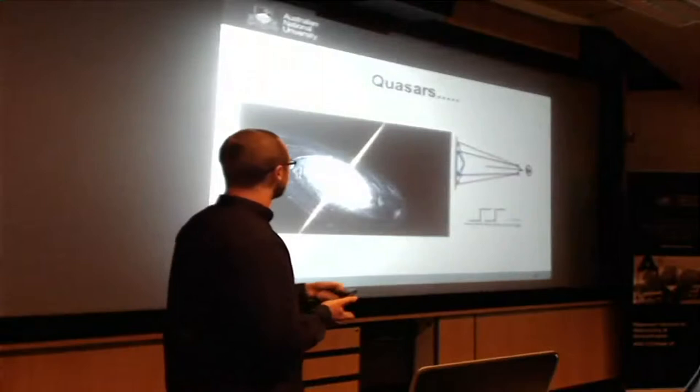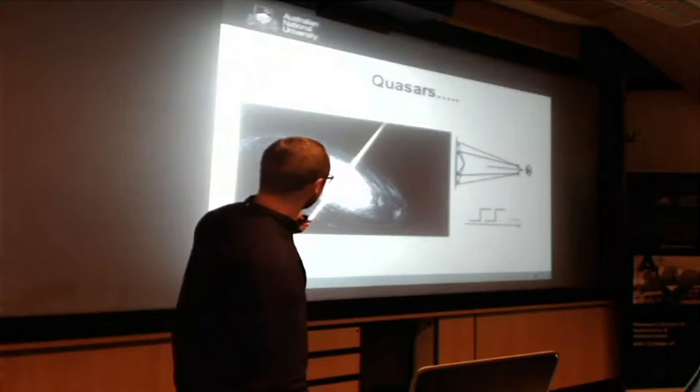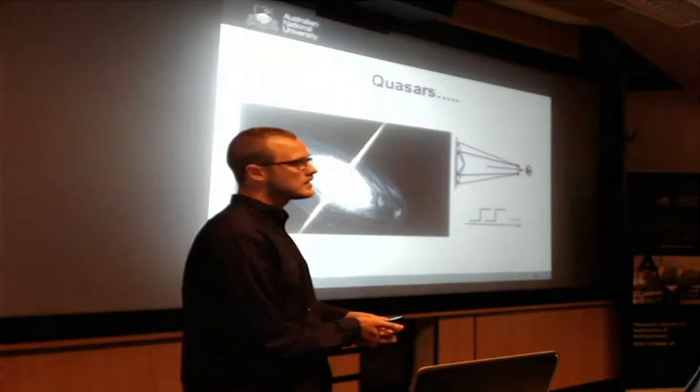So, what is a quasar? It's a massive black hole at the center of a galaxy, with a very hot and luminous accretion disc around it, and it also has these big jets that come out either end of it.